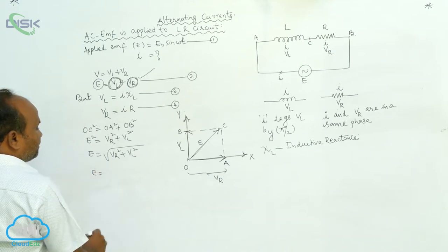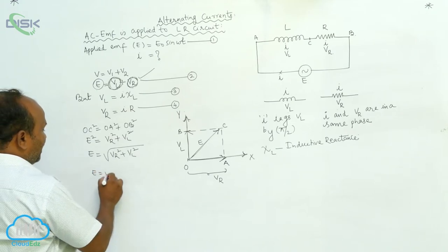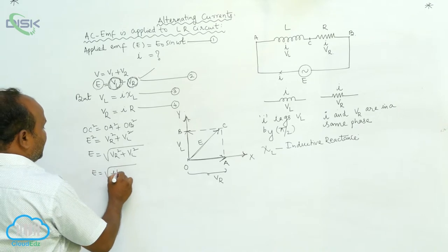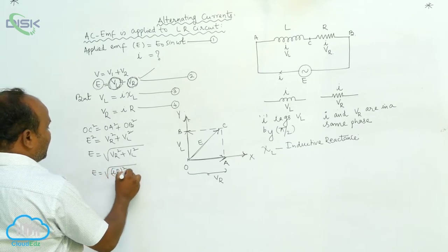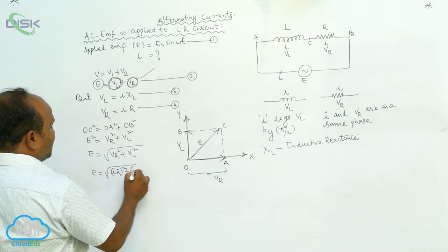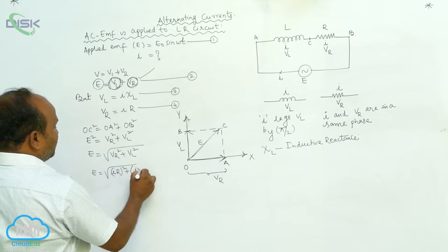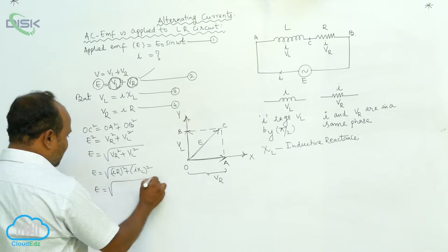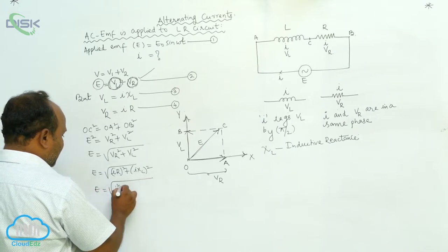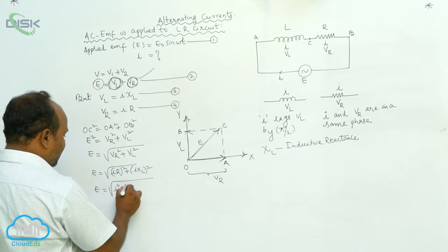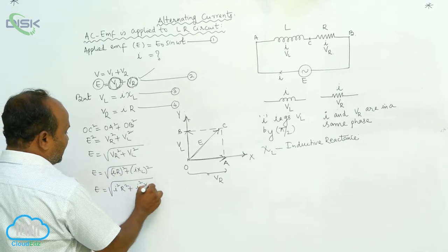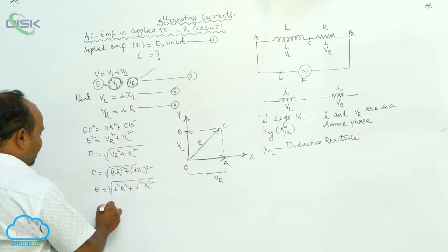Therefore, E is equal to the square root of — substituting VR equals I×R and VL equals I×XL — E equals the square root of I²R² plus I²XL².